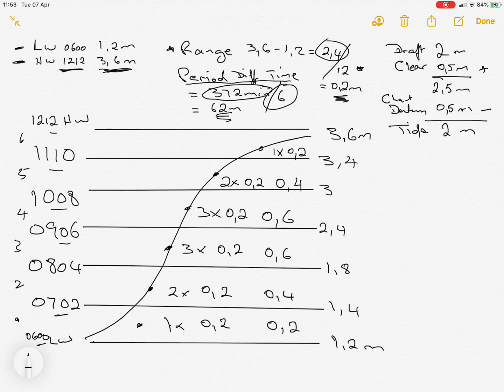If we start on the other side of the scale with our low water at 1.2, in the first period we get an extra 0.2, second period an extra 0.4, then 0.6, 0.6, 0.4, and 0.2. We add those to each period and eventually go from 1.2 meters to our full high water tide at 3.6 meters.